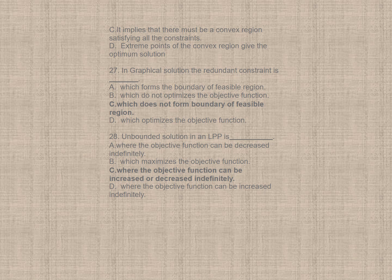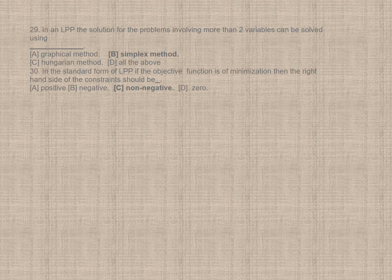Question 28. Unbounded solution in LPP is C, where the objective function can be increased or decreased indefinitely. Question 30. In the standard form of LPP, if the objective function is of maximization, then the right-hand side of the constraint should be non-negative. So, actually I have, this could not be handled properly as far as this content is concerned. So, I found these set of questions also from LPP, though it may not be in your syllabus.